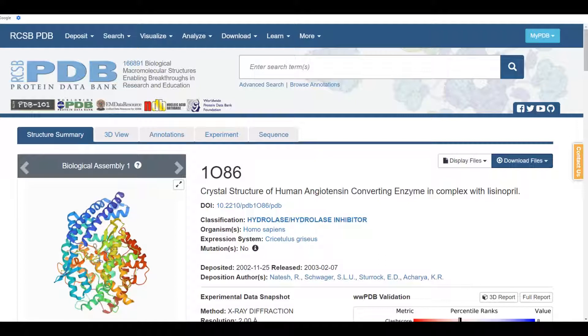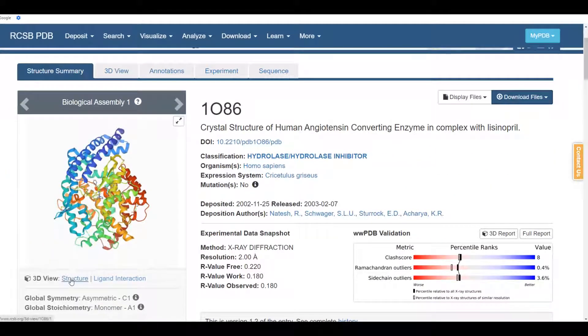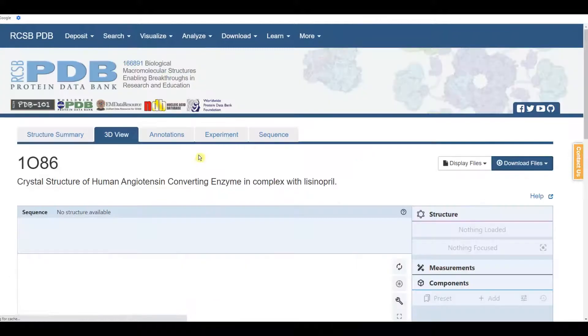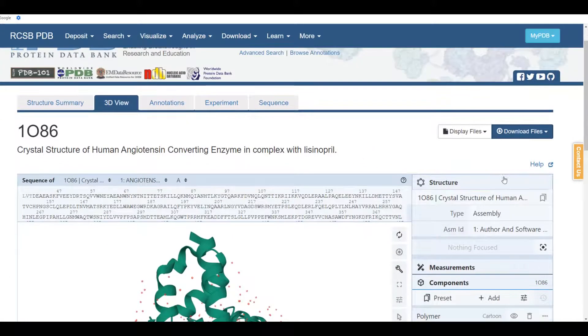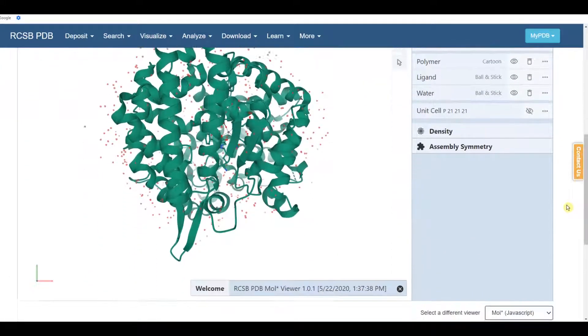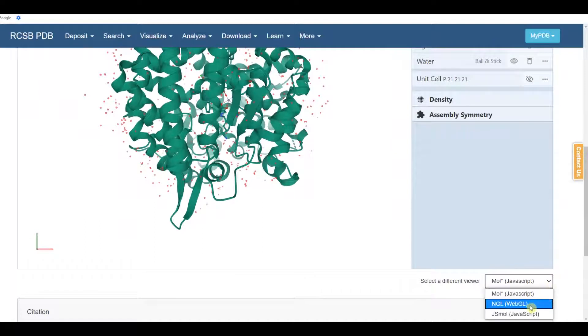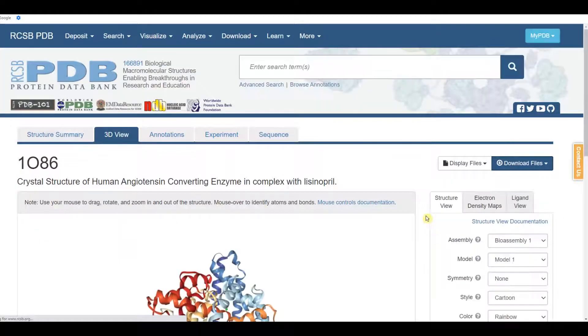This protein is an important target in the biological pathways that regulate blood pressure. Let's click on the structure link and bring up the structure. I'm going to change our viewer to NGL. It's in the bottom right corner.